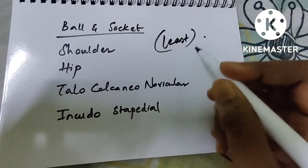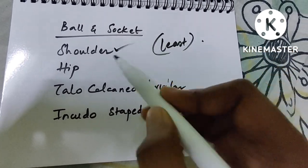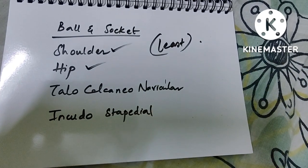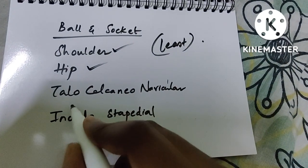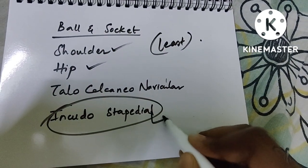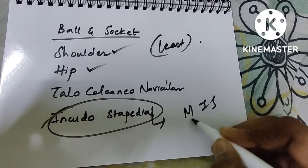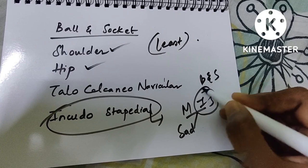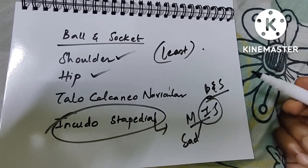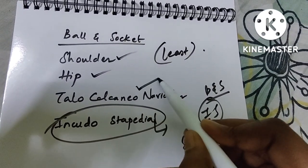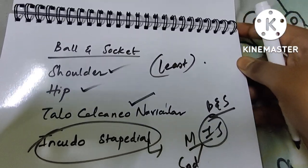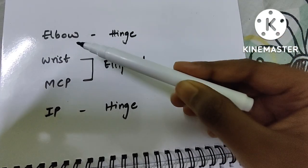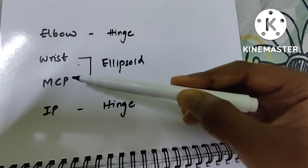Ball-and-socket joints: shoulder and hip are well known. New ones to remember: the incudostapedial joint (incus and stapes) is ball-and-socket, and the taloCalcaneonavicular joint is also a ball-and-socket joint.